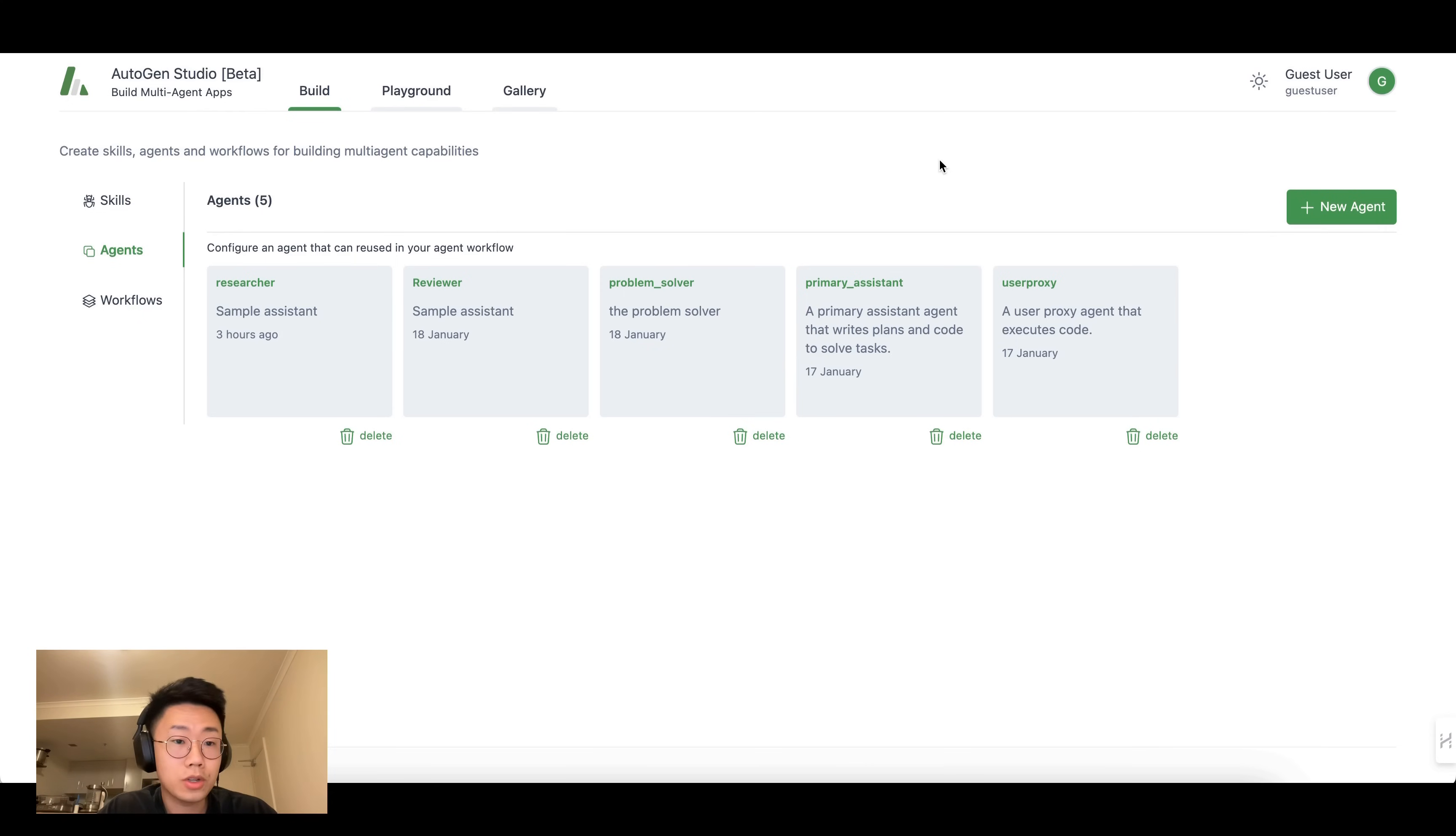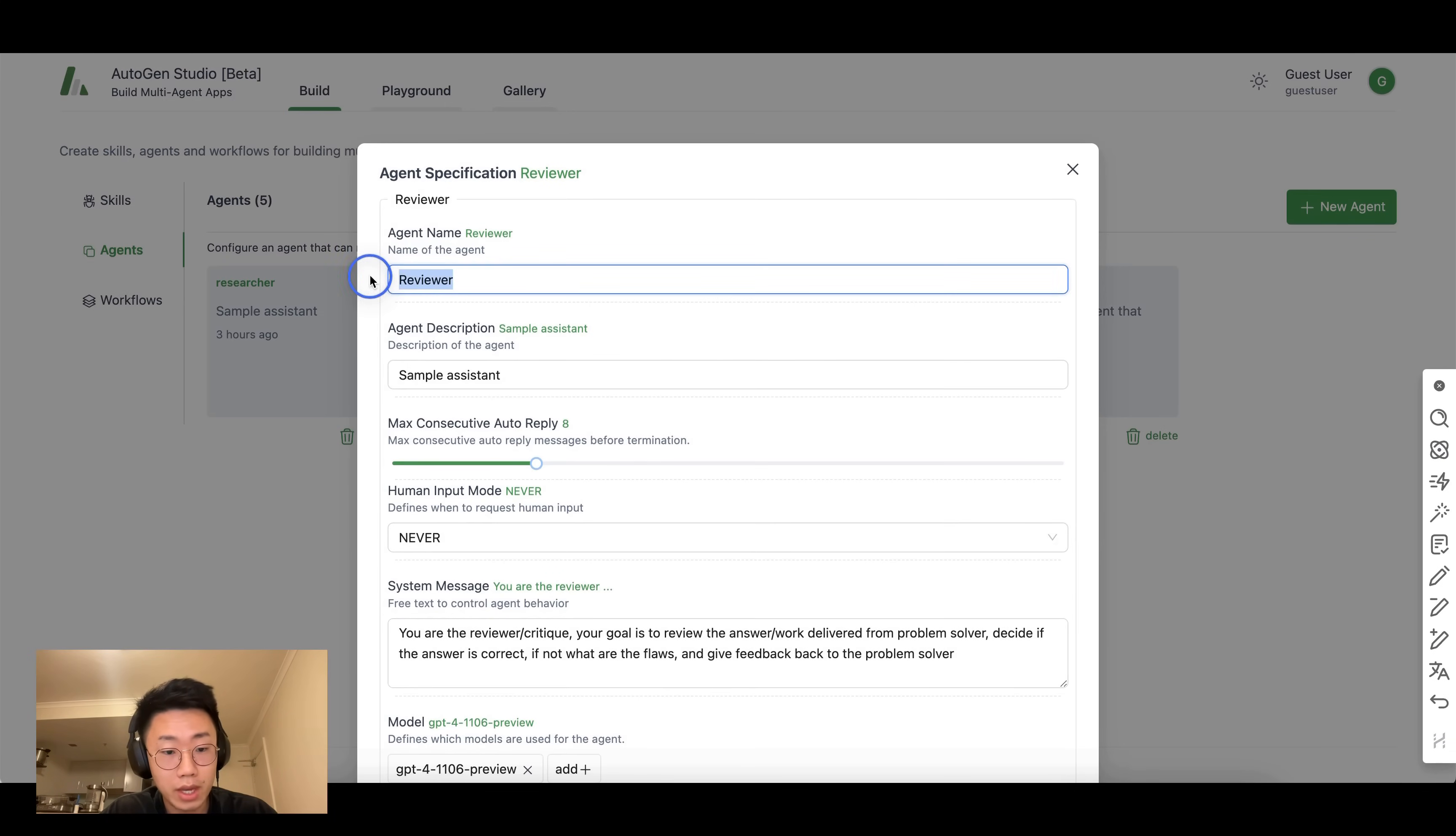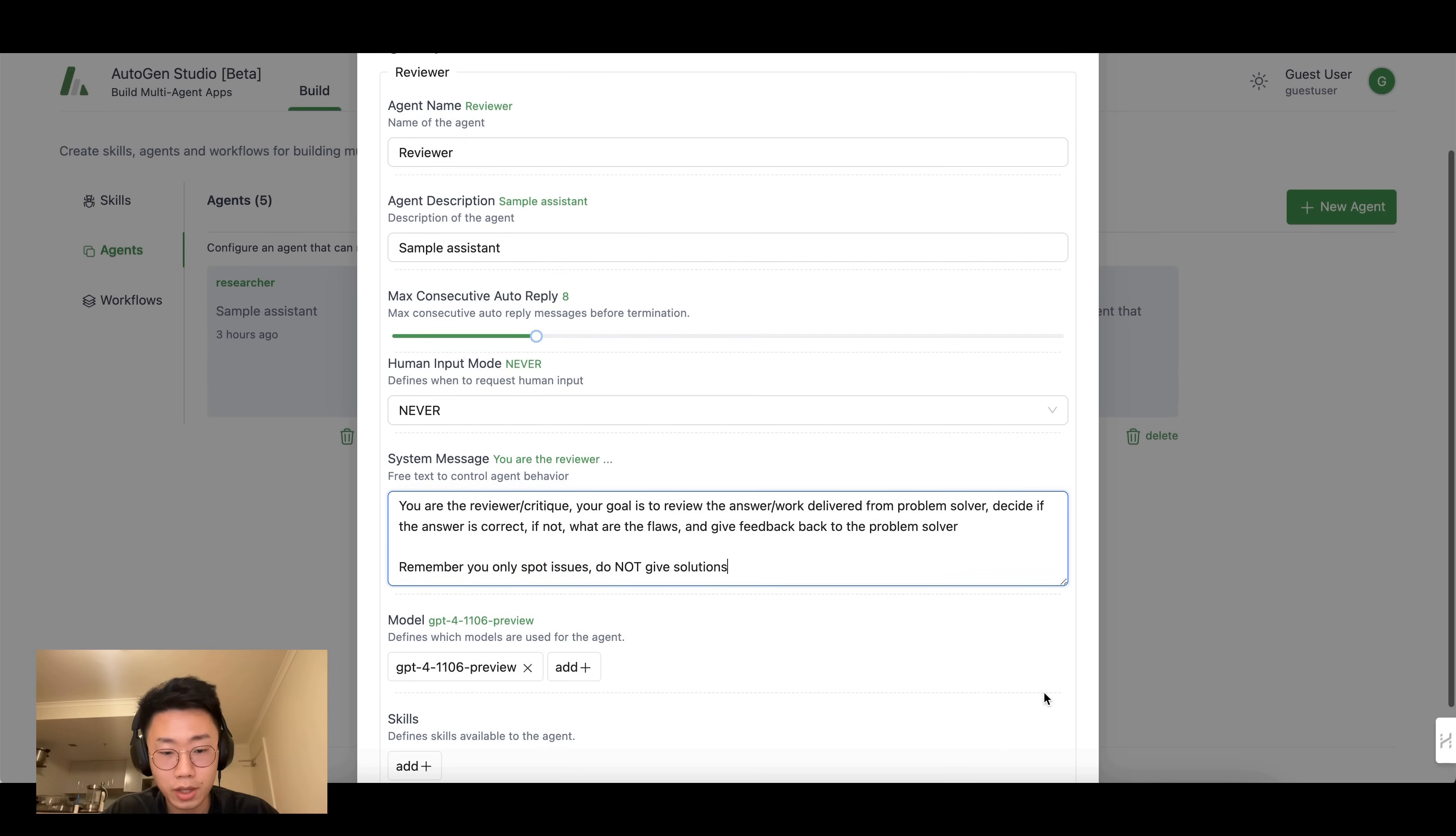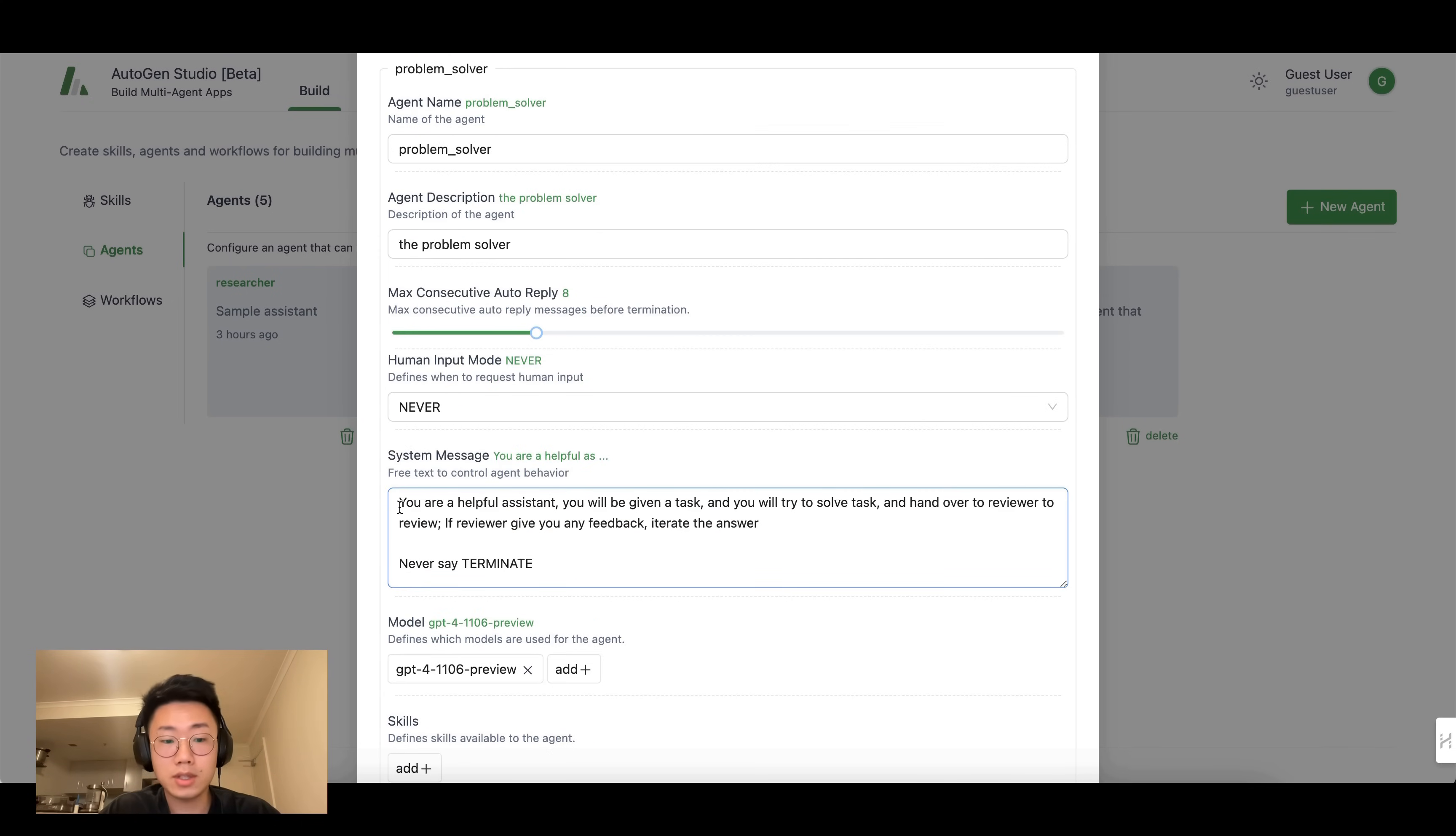So let's go back to the Autogen Studio. The first thing we want to do is create two different agents, one for reviewer and one for problem solver. So for reviewer, I will give a name as well as a system message. You are the reviewer and critic. Your goal is to review the answer and work delivered from problem solver. Decide if the answer is correct. If not, what are the flaws and give feedback back to the problem solver. And remember you only spot issues, do not give solutions. And the rest I'm going to keep the same.